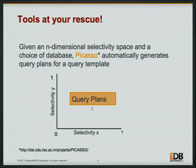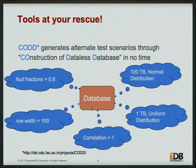Tools at our rescue. The first tool we are going to discuss is Picasso. Given an n-dimensional selectivity space, Picasso can automatically generate query plans for a given query template. A query template lets us define variables — here we show X and Y as two dimensions — and for different values of X and Y, we see the query plans. CORD generates alternative test scenarios by construction of a data-less database. It does not actually create the database, but creates metadata so the optimizer thinks the data exists.